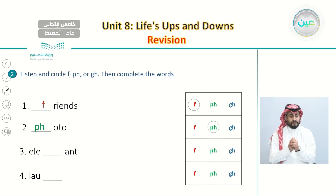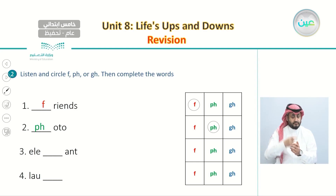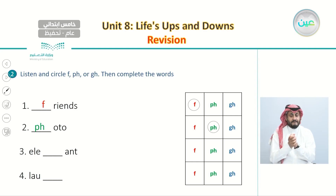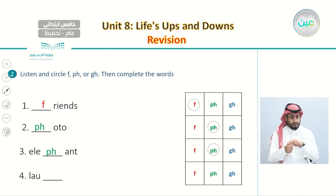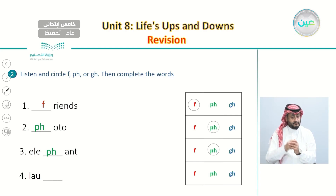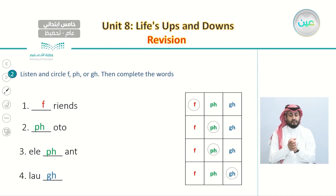The word for number three is elephant. Do you remember how to write elephant — is it F, PH, or GH? Of course we write it with PH, so we write PH and circle it. Now the last one is laugh. Does it come with F, PH, or GH? It comes with GH, so we go and circle it on the table. Such exercises are important as they help us differentiate between different letters that share the same sound.